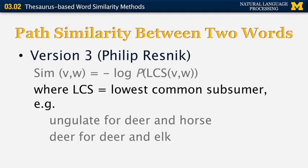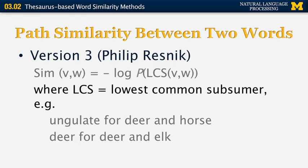Let's look at more advanced versions of path similarity that use WordNet-type trees. Version 3 was developed by Philip Resnick in the 90s, and it is based on minus the logarithm of something — but that something is not the path length. Instead, it is the probability of observing the word in the corpus that is the lowest common subsumer (LCS) of the two words being compared. The LCS is simply the node in the tree that is an ancestor of both nodes. So the LCS for deer and horse is ungulate, and the LCS for deer and elk is deer.